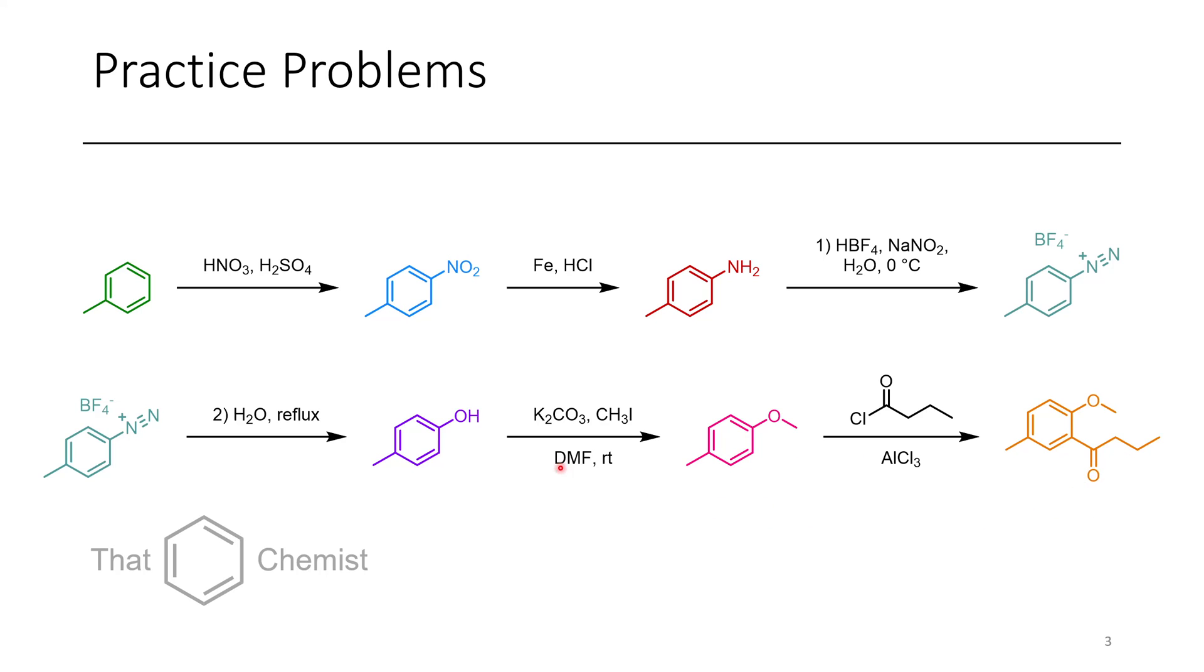Now you might have thought we could just do the Friedel-Crafts acylation on this phenol directly, and you could. However, you might also get acylation at the oxygen. Now if you do get that ester as your product, you could actually do something called a Fries rearrangement. And what this will do is, in the presence of a Lewis acid or under photochemical conditions, you could convert this directly to the ortho-acyl product. You just have to methylate afterwards.